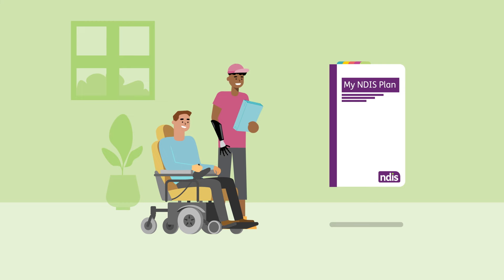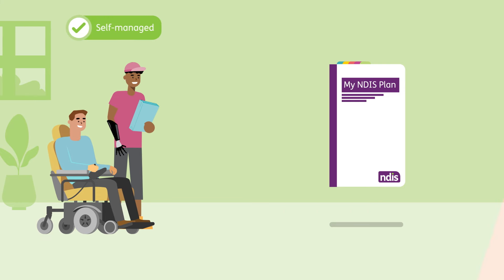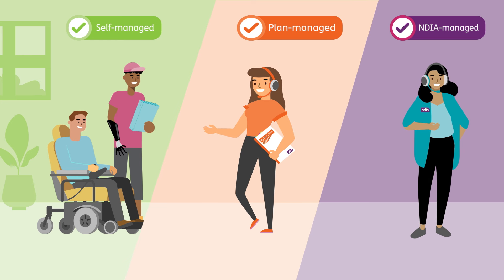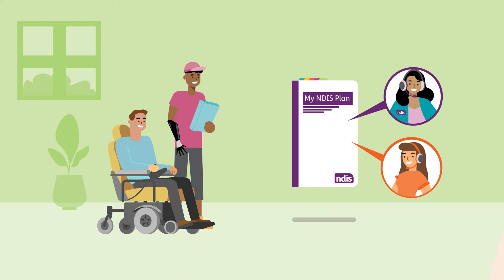There are three ways that you can manage your plan: self-management, plan management, and NDIA management, also known as agency managed. How you want to manage your plan is an important decision. You can choose one option or a combination of these options.